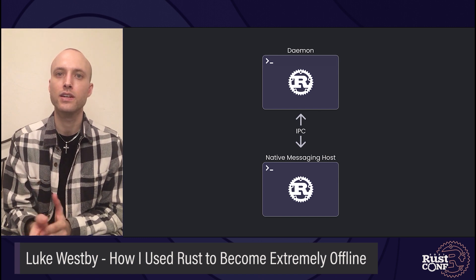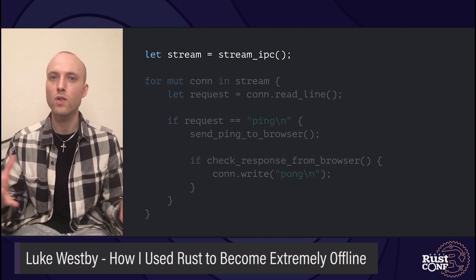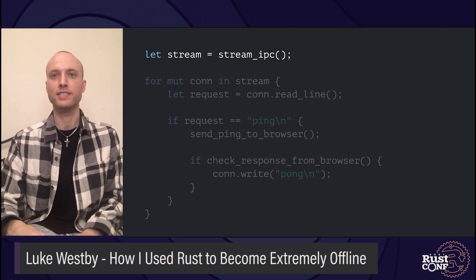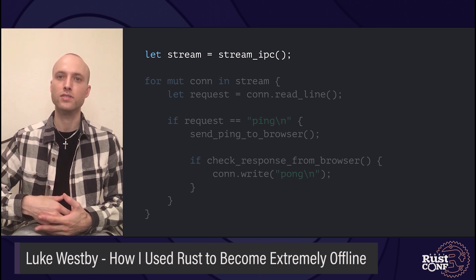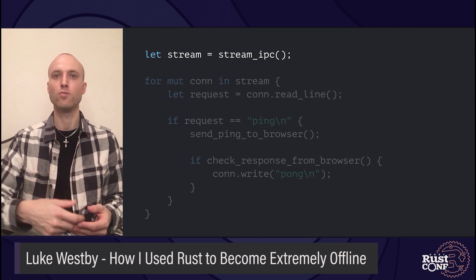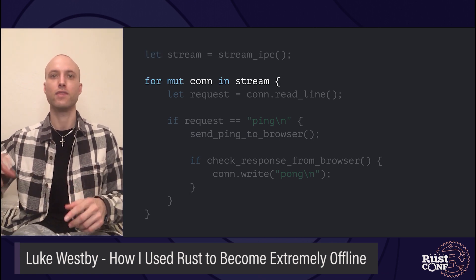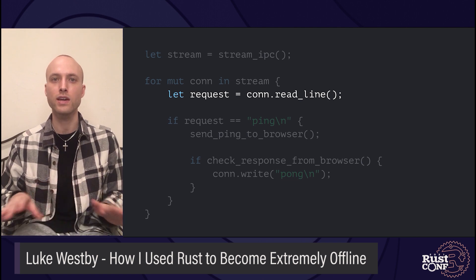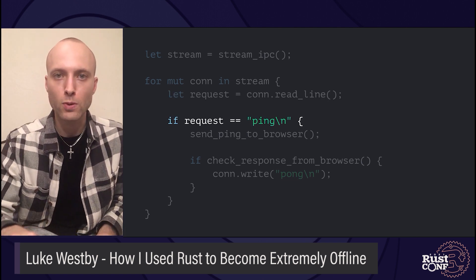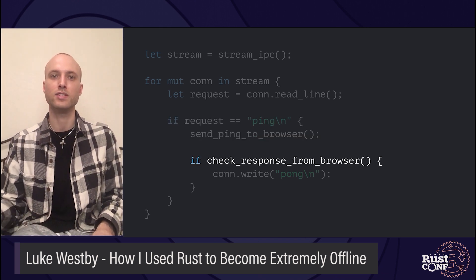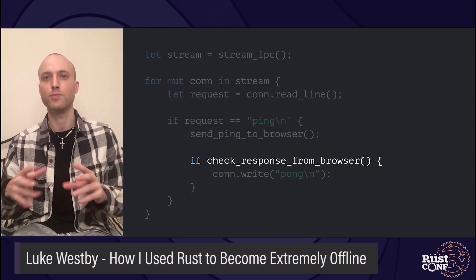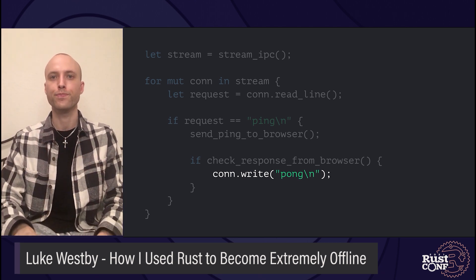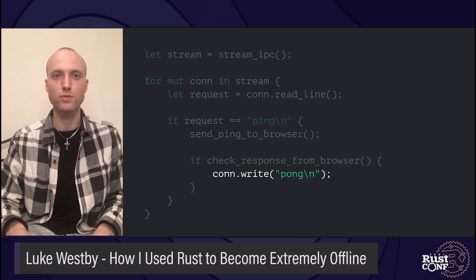Now let's look at the native messaging host side. There's not a whole lot going on — it's just a proxy between the daemon and the browser itself. We accept incoming IPC connections. The native messaging host runs continuously, whereas the daemon runs once and exits. For each connection that comes in, we await a request. If the request is ping, we proxy that up to the browser. When we receive a response from the browser, we check if it says pong. If this function returns true, we send pong back to the daemon so it can finish up. Pretty simple — it's just a proxy.